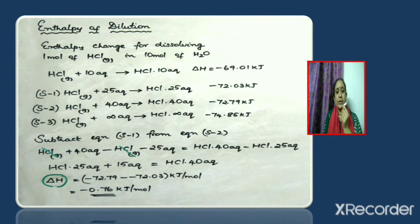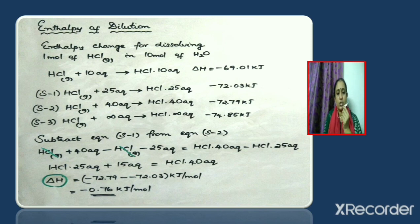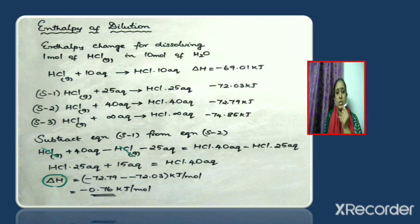Since we obtained the equation HCl·25aq + 15aq → HCl·40aq by subtracting equation S-1 from S-2, to get ΔH we subtract the ΔH of S-1 from the ΔH of S-2. That gives the enthalpy of dilution ΔH = −0.76 kJ/mol. From the equation HCl·25aq + 15aq → HCl·40aq, it is clear that HCl gets diluted.